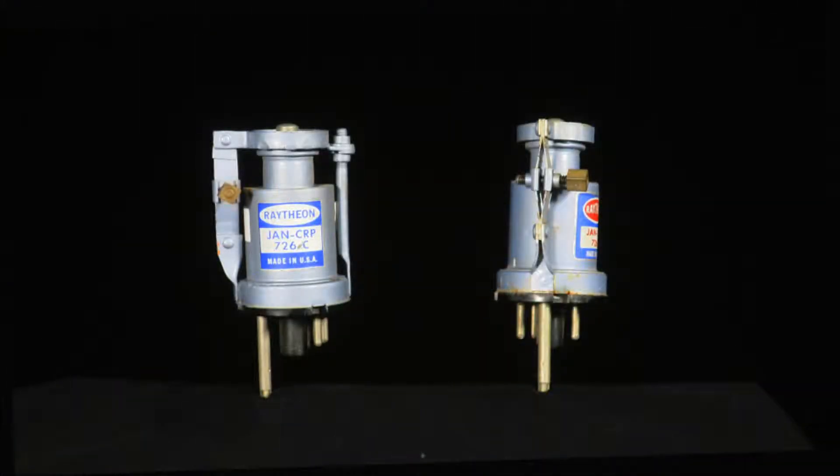There are other X-band sources. One of the oldest is this, a klystron vacuum tube. These were used in the 1950s and 60s for radar receiver local oscillators and by ham radio operators in 10 gigahertz transceivers. They were also used in a microwave training kit for colleges.